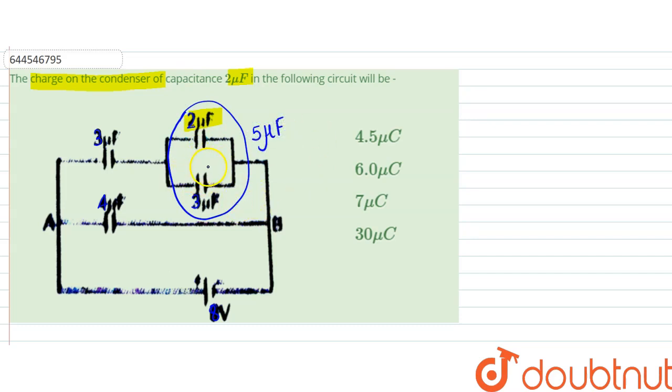When they are parallel they directly add up, and when they are in series the reciprocal of them get added up and the inverse of that is the equivalent capacitance. So now 3 and 5 are in series.